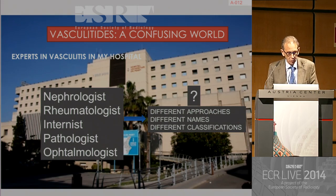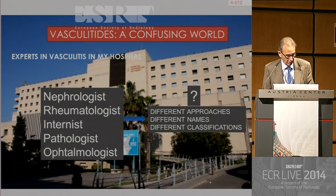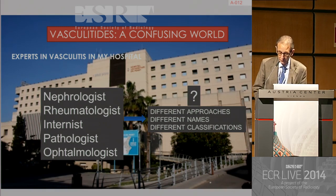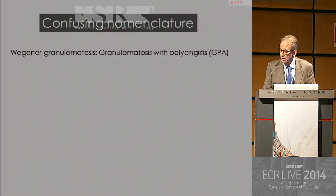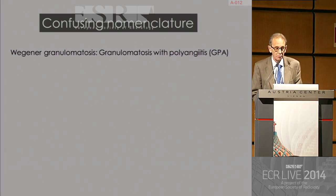Vasculitis is a confusing world. The experts in vasculitis in my hospital are nephrologists, rheumatologists, internists, pathologists, ophthalmologists, and probably vascular surgeons, which means different approaches, different names, different classifications. There is a confusing nomenclature and many other confusing things in vasculitis.